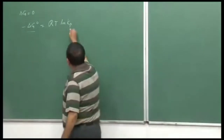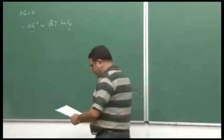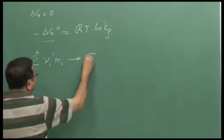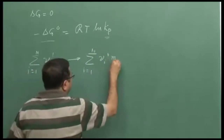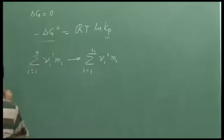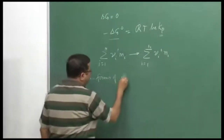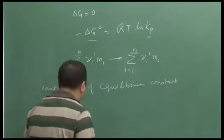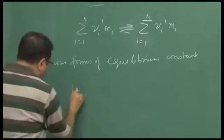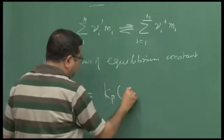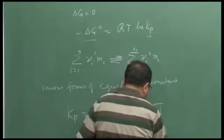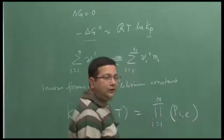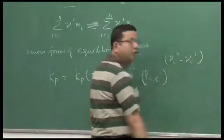Let us continue from there. We have been discussing Kp in the last class. Now let us look at various forms of this constant. Let us consider the generic chemical reaction that we have been discussing so far. What we are now going to talk about is various forms of equilibrium constant for this generic chemical reaction at equilibrium. First of all Kp — we have defined Kp. We know that Kp is a function of temperature and we have defined it as the product over all species i of partial pressure at equilibrium raised to the power of the stoichiometric coefficient.